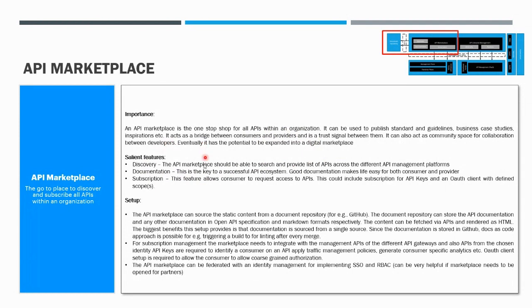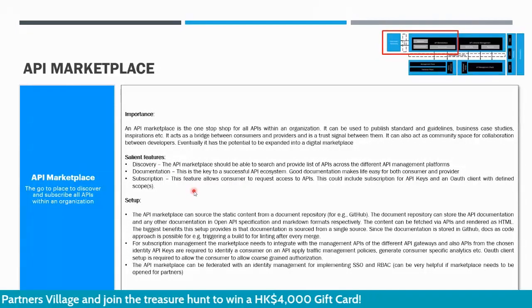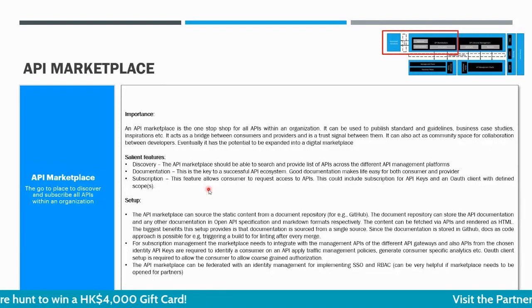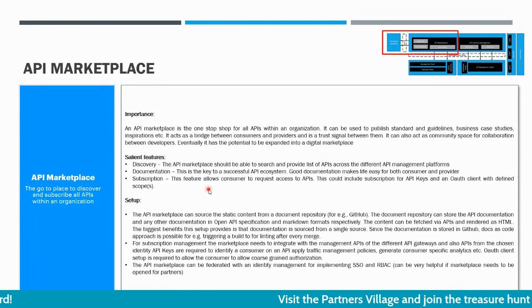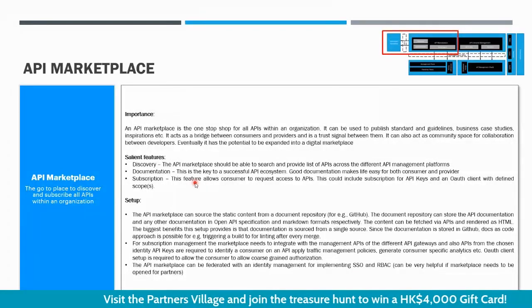Key features of the marketplace include discovery — how APIs are found — and documentation, which is a key aspect for a successful API ecosystem since good documentation makes life easier for both consumers and providers, reduces support questions, and speeds time to market. Finally, subscription is probably the most important feature, allowing consumers to get onboarded and start using APIs. There can be multiple parts: a subscription on the API gateway providing an API key, plus an extra security layer such as OAuth, requiring client onboarding on an identity provider.